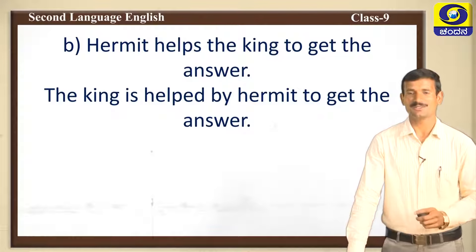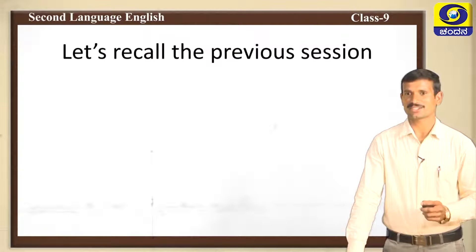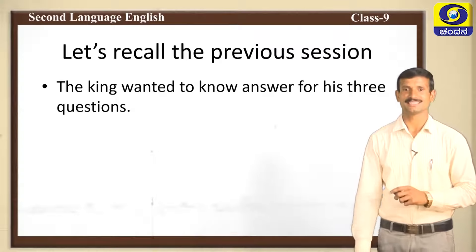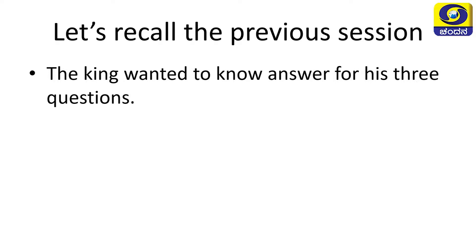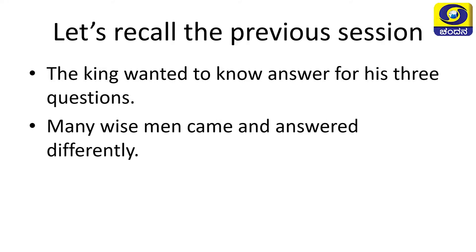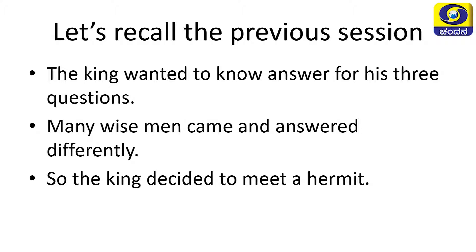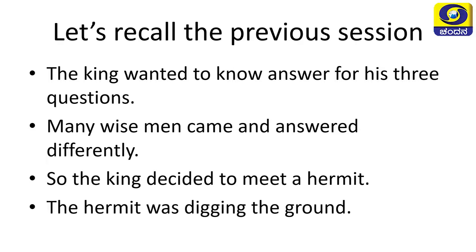Now let's recall the previous session. The king wanted to know the answer to his three questions: What is the right time to begin something? Who should a king listen to? What is the most important thing for a king to do? Many wise men came and answered differently, but the king was not satisfied. He decided to meet a hermit.